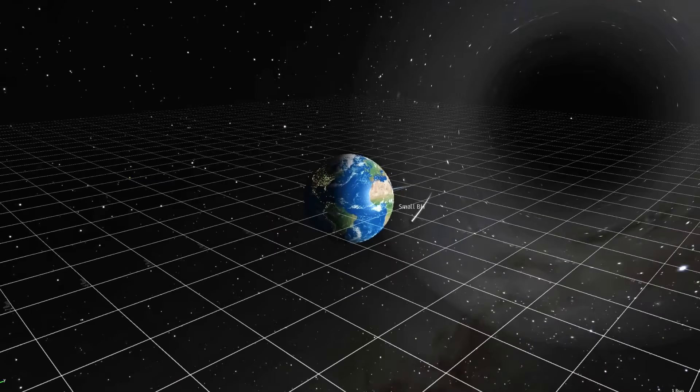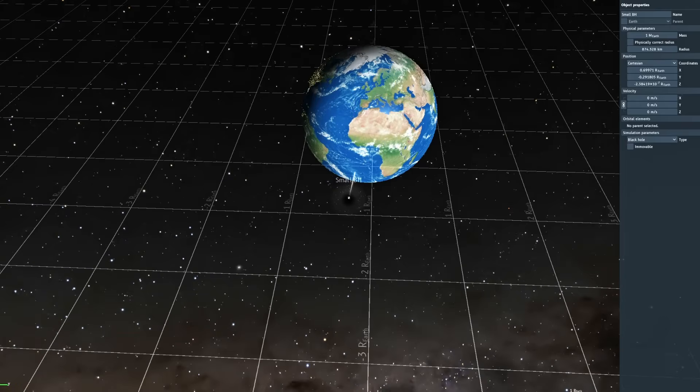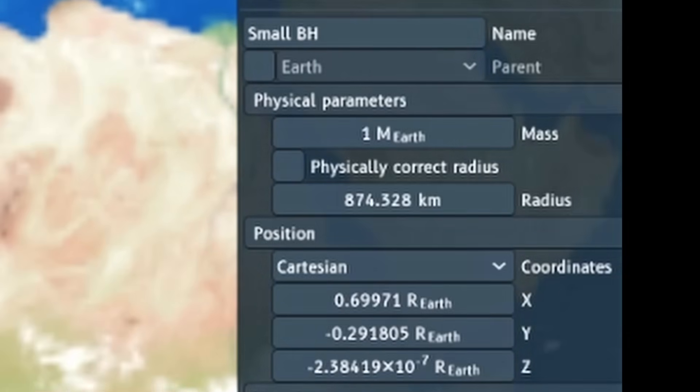We're gonna start with the small black hole obviously. Let's get rid of these two. This is a very small black hole, but even though it's not that big, it still weighs as much as the earth.